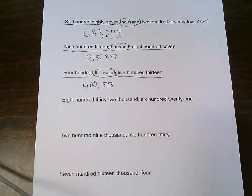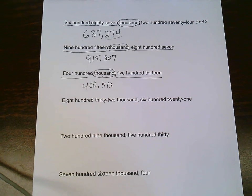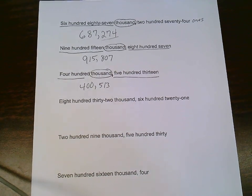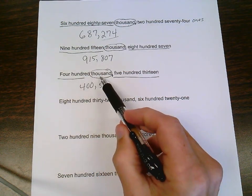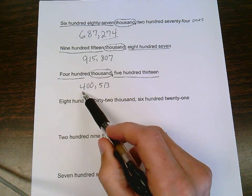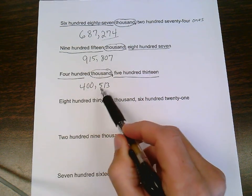Once again, to check these over, I make sure they're said and read exactly the same. The word form says 400,513. The number form says 400,513.